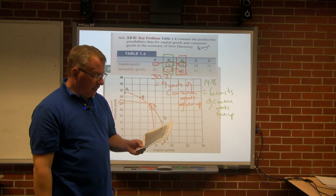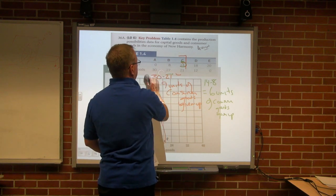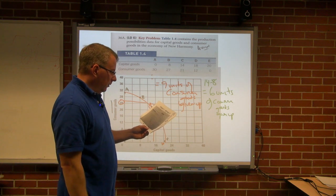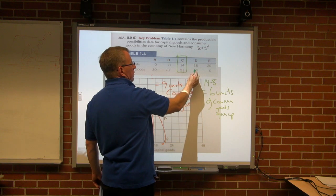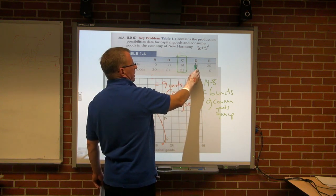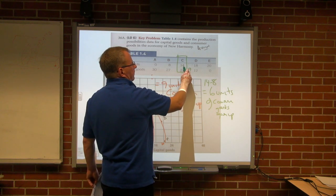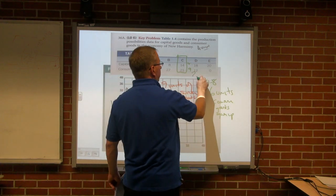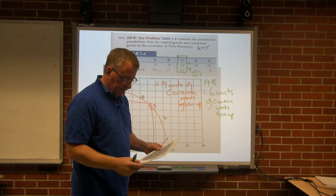Part G: assuming the economy is producing at combination C, what is the approximate per unit cost of an additional capital good? We don't have 15 in the table, so we look at 14 to 18 - that's a difference of 4. We have to give up consumer goods from 21 to 12, which is 9. For going from 14 to 18 capital goods (only 4 more), we've got to give up 9 consumer goods. It's essentially a 2 to 1 ratio - we have to give up 2 consumer goods for every additional unit of capital good. The answer is about 2.